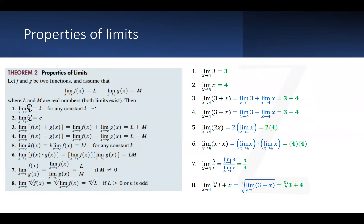If the function itself is a linear function, then because the function is continuous — which we're going to talk about later — the limit is just the evaluation of the function at the specific point, which is when x is equal to c. When we write x approaches c, this means x can be approaching from the left or from the right. This includes both cases, and the assumption is that when x approaches c there's a value, which is l for function f and m for function g.